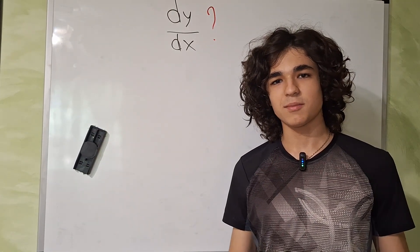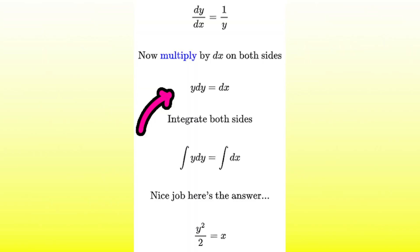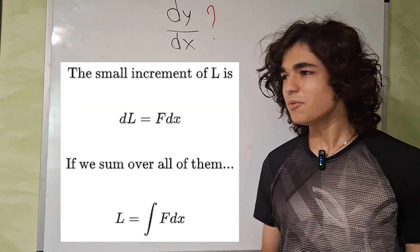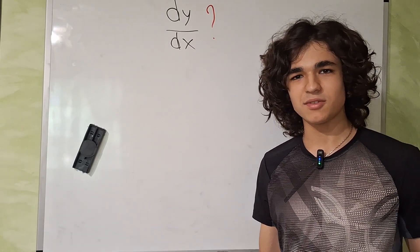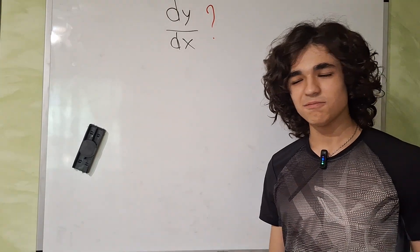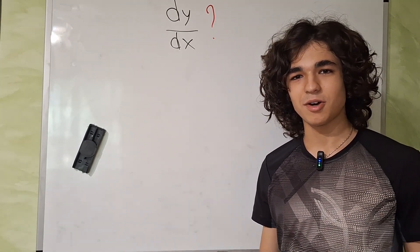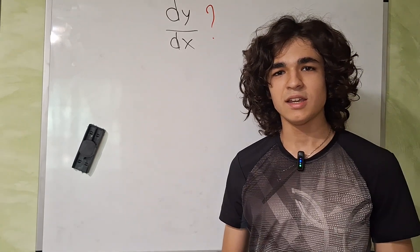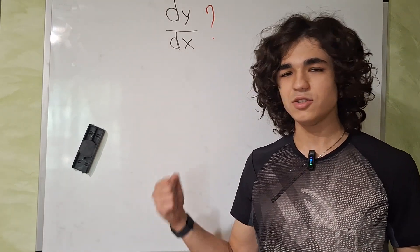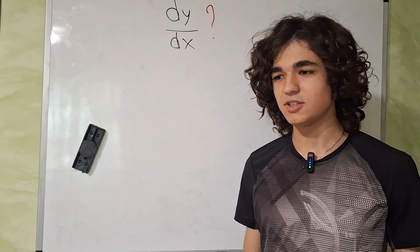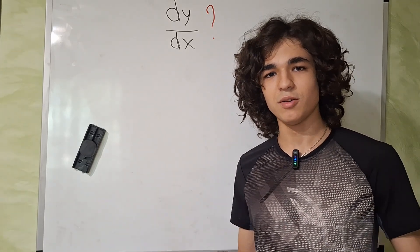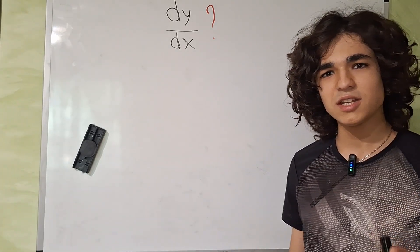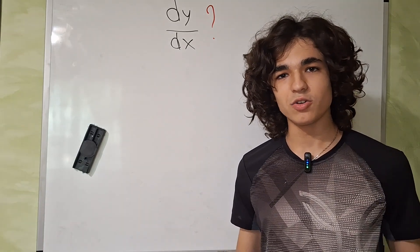If you've done some calculus, you probably came across something like this, or perhaps this. And you probably asked yourself whether this is rigorous or not. You probably stopped thinking about it, or you heard some mathematician say that this is not rigorous and you shouldn't use this notation — like multiplying the dx's, then integrating both sides — because this is not rigorous. It only works, but it is not rigorous. But in this video, I want to convince you that this is actually not true.